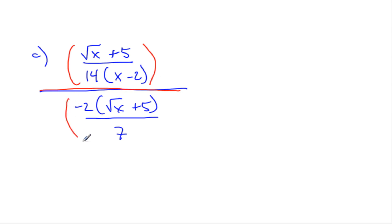Another one to try. Square root x plus 5 over 14 brackets x minus 2, all over negative 2 brackets root x add 5 over 7. Wow. That looks really complicated. What was I thinking? But this is an important line here. Because I have a fraction on the top and a fraction on the bottom of a fraction. That line means divide.